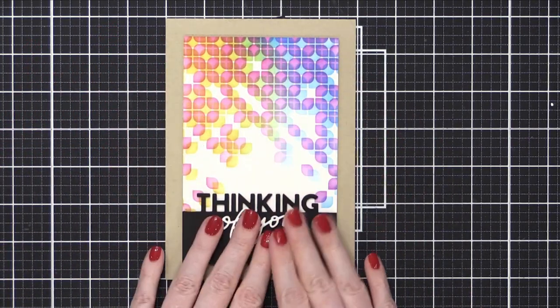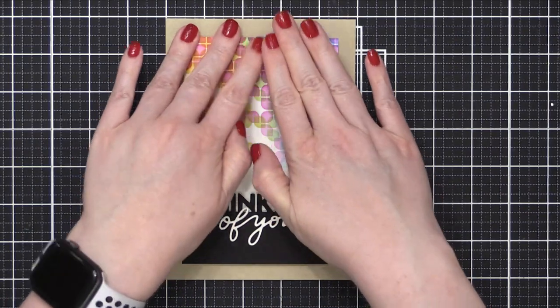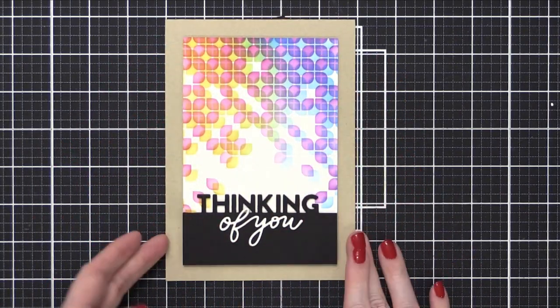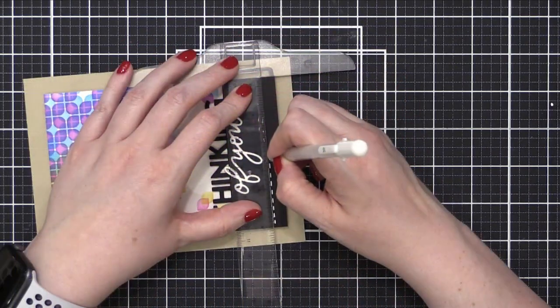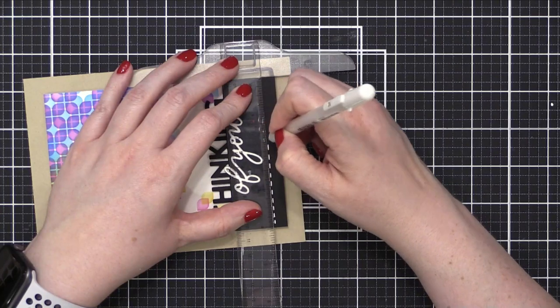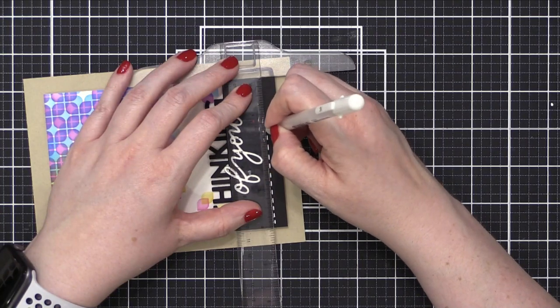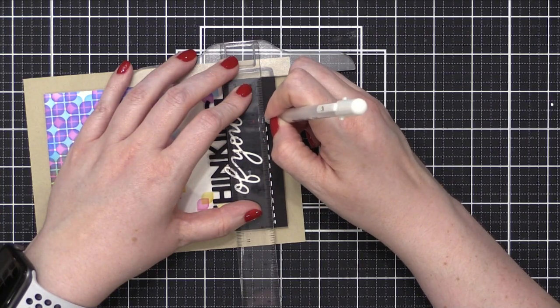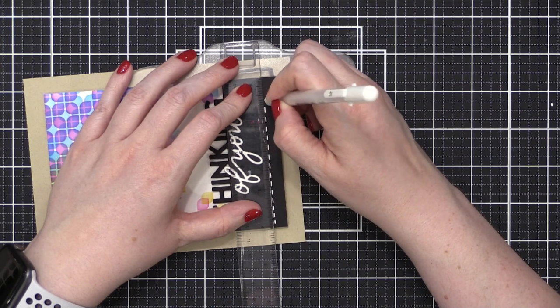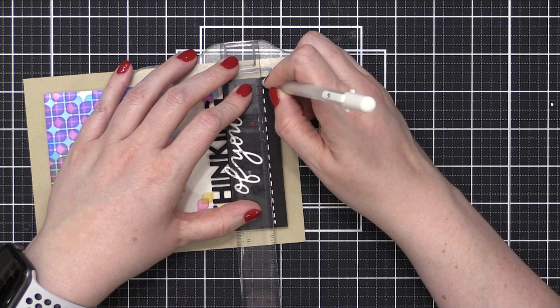Now at this point, I realized there was a little too much space at the very bottom of the card in that black area. So I decided to take a white gel pen, this is a number 10 Gelly Roll pen, and just use a ruler and add a dash line. That's just gonna make that spacing look a little bit more intentional. And that finishes the card for today.